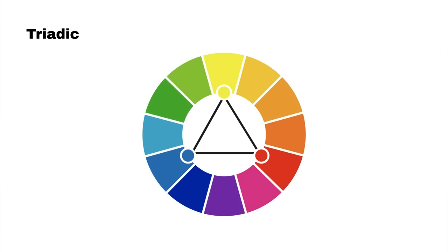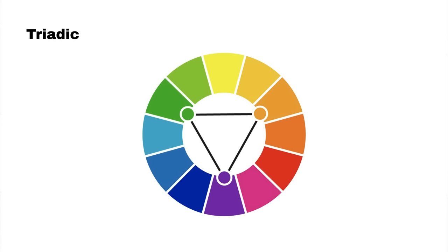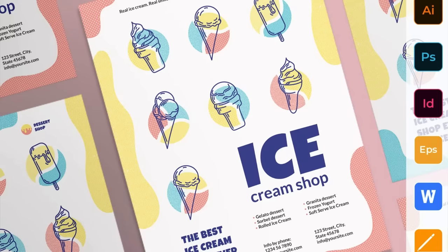Next up, we have a triadic color scheme. This uses three colors that are evenly spaced on the color wheel to form a triangle. Like we saw with primary colors, here we have blue, yellow, and red. On the second example, we can see a combination of secondary colors — green, orange, and purple. On the primary color example with red, yellow, and blue, the colors work beautifully, and all colors are used very evenly so no single color overpowers the rest.